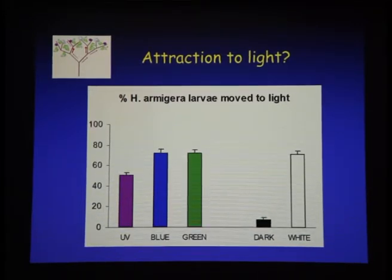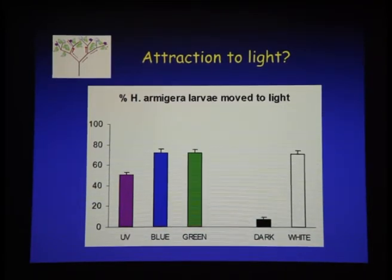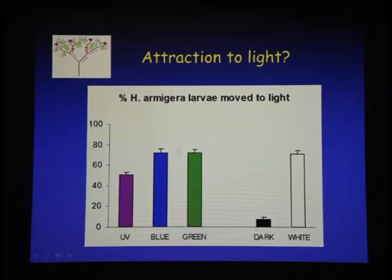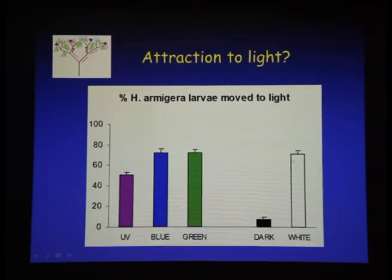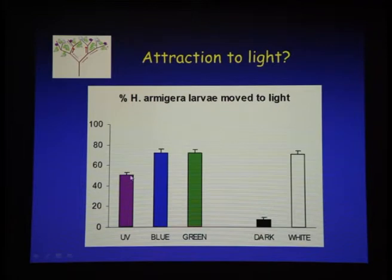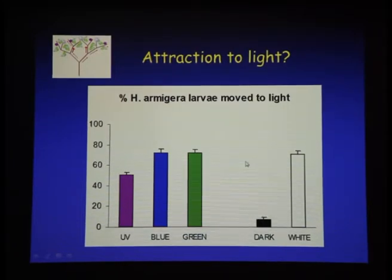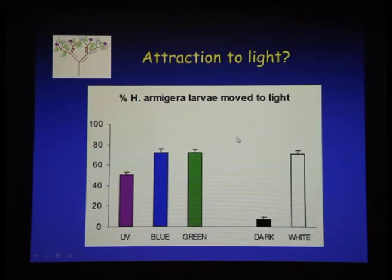For attraction to light, she puts larvae in a box with a light at one end and sees what percentage move towards it. It's a little under 80% moving towards white light. Breaking it into blues, greens, and ultraviolet, ultraviolet attracted only about 50%. In the dark, they didn't tend to like to move. Light is a common hypothesis for what takes them up in the plant.